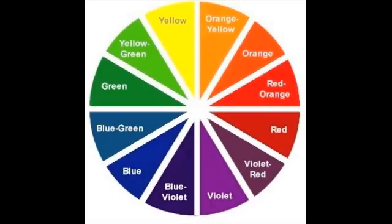Here we have the complete color wheel with its twelve colors. All these colors are made from the three primary colors: red, yellow, and blue. So now you know what makes primary, secondary, and tertiary colors. You also have the color combinations that complete each one.